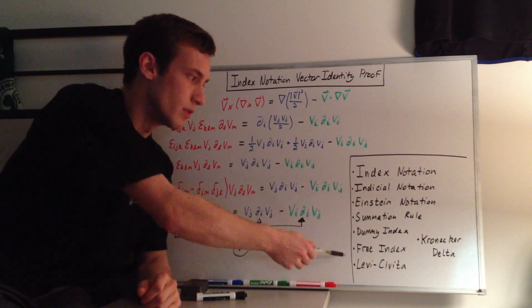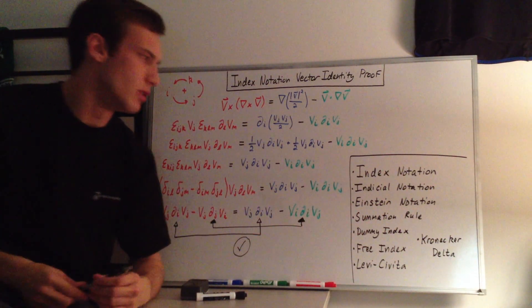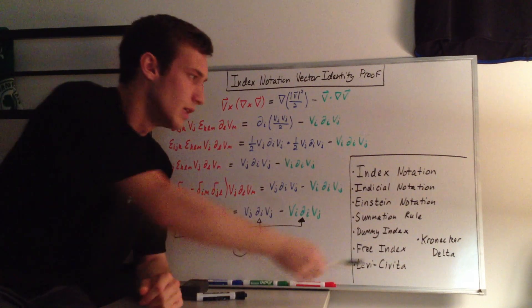It's like the summation rule, the dummy index, free index, Levi-Civita, if I'm pronouncing that correctly, and the Kronecker delta.